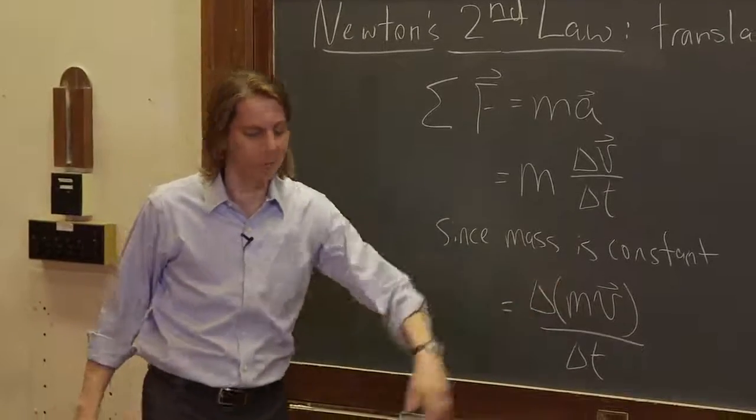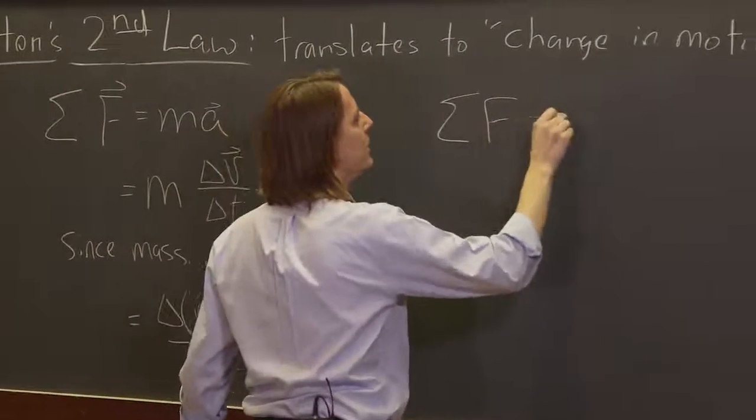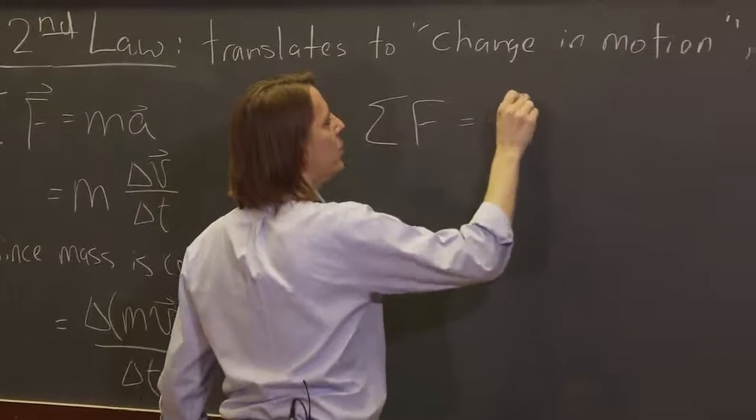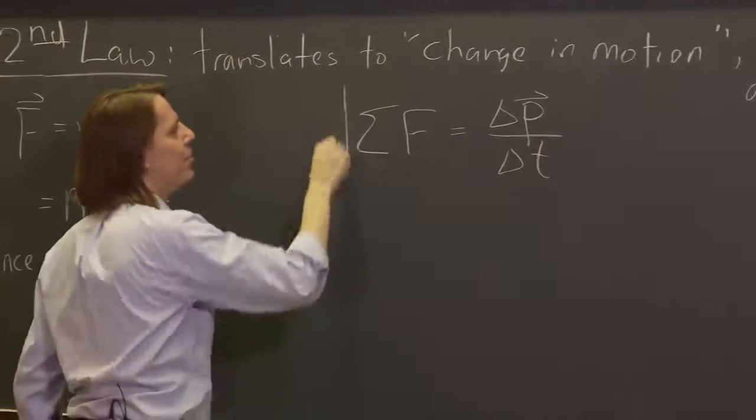And of course, what is that? That's the momentum. So another way to write Newton's second law is that the sum of the forces equals the change in p, the change in momentum per unit time.